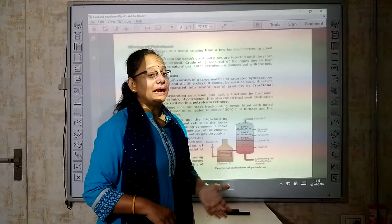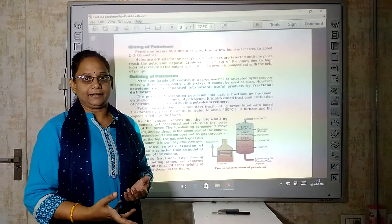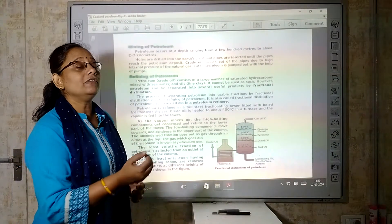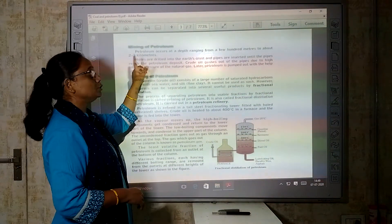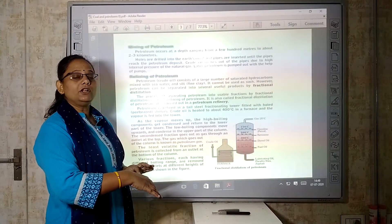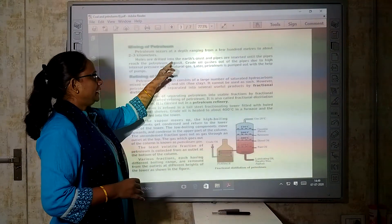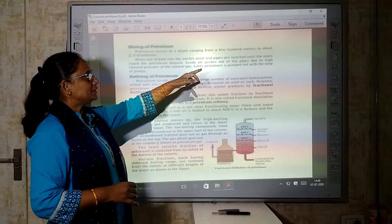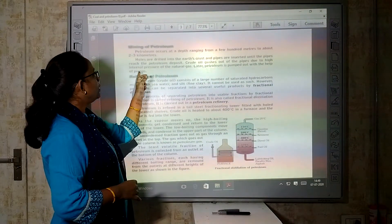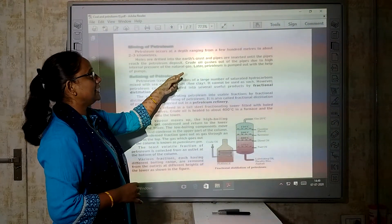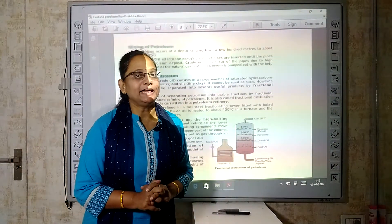Mining of petroleum. Petroleum occurs at a depth ranging from a few hundred meters to above 2-3 kilometers. Holes are dug into the earth's crust. Pipes are inserted until the pipe reaches the petroleum deposit. Crude oil gushes out of the pipe due to high internal pressure of the natural gas. Later petroleum is pumped out with the help of pumps. Now look for example, you will see boring.